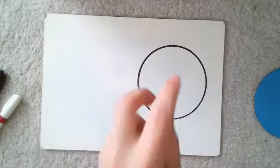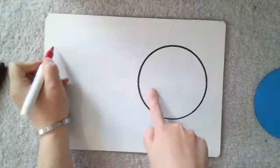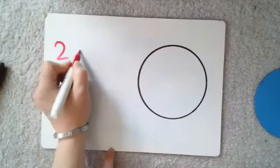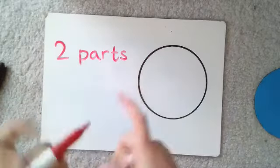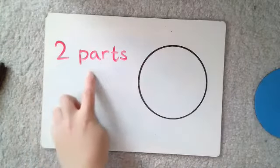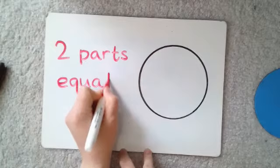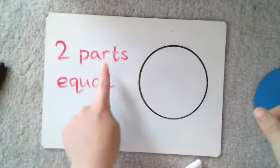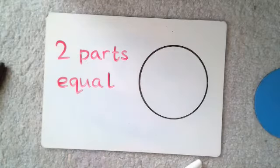The two things that we always need to remember when we're finding half is: how many parts do we split it into? That's right, we split it into two parts. Can those two parts be any size? No, we have to remember that the two parts are going to be equal. Well done if you said equal! So I'm going to split my circle into two parts and I'm going to make sure that those parts are equal.